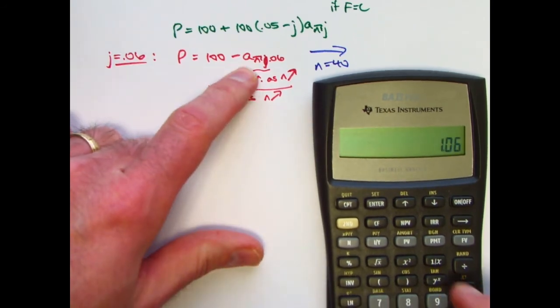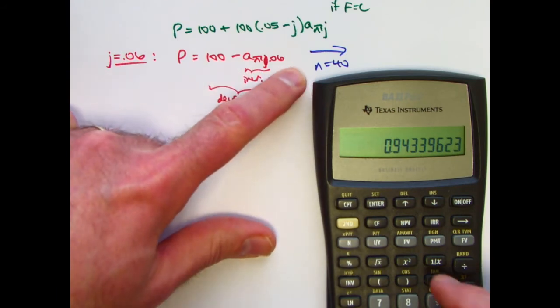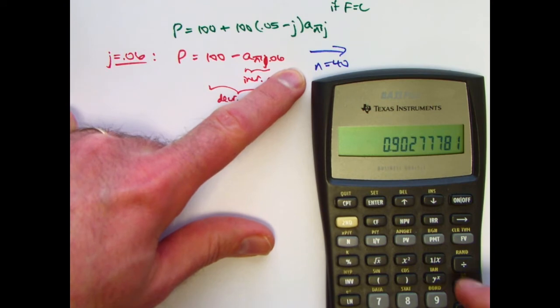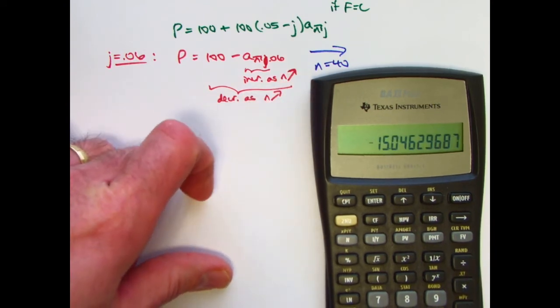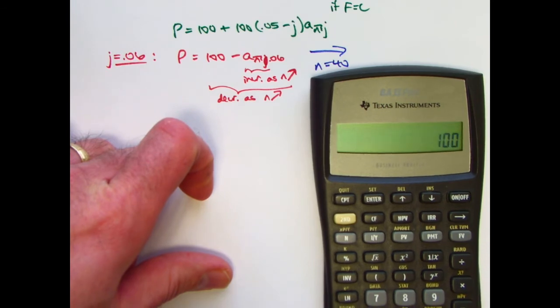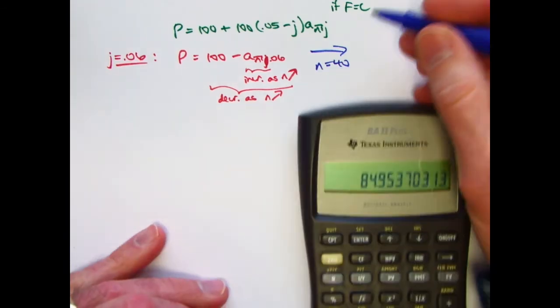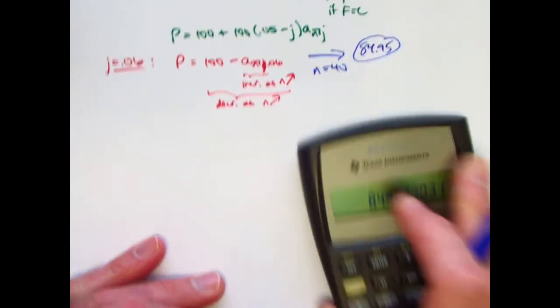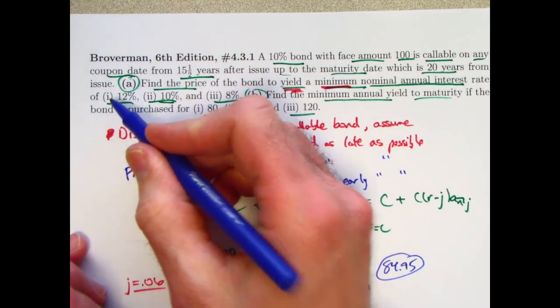So we have 1.06, there's 1 plus j, its reciprocal as v, raised to the 40th power, subtract from 1, divide by 0.06, subtract that from 100. The answer here is 84.95. And that is correct. So that's the answer for part a, part subpart 1.